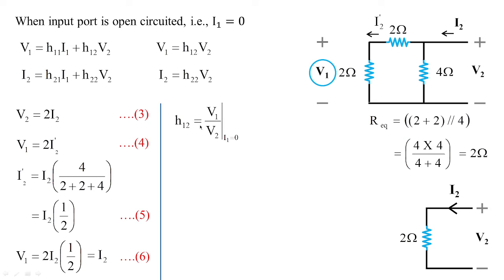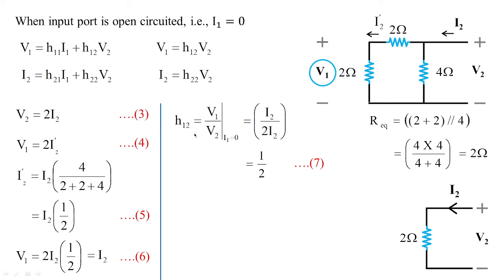h12 = v1/v2 at i1 = 0. We have v1 = i2 and v2 = 2·i2. Substituting: h12 = i2 / (2·i2) = 1/2. Since it is v1/v2, it is a voltage gain — specifically the reverse voltage gain — and has no units. Let this be equation 7.